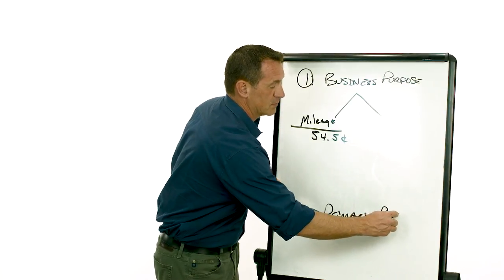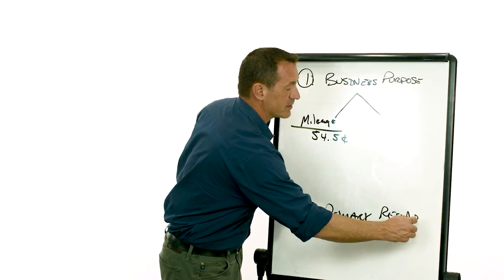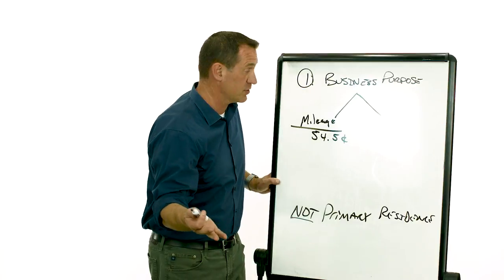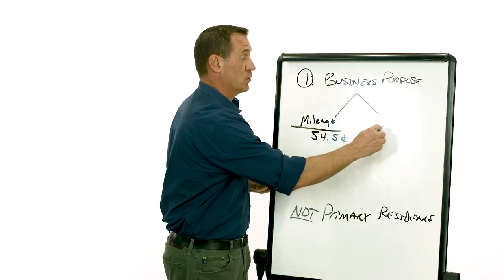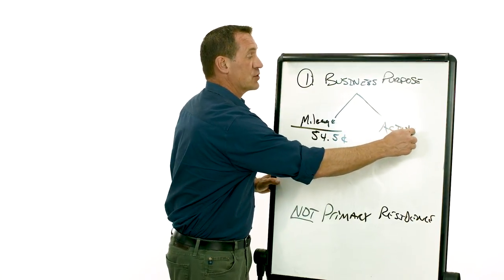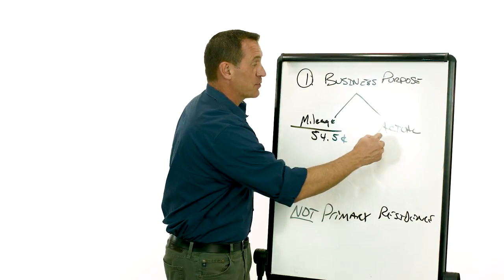Primary residence. So the RV is not your primary residence. Now your second option in this strategy is to do actual. Now in order to do actual, which means you're gonna get to write off depreciation.